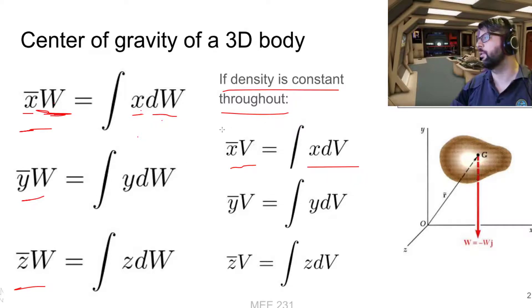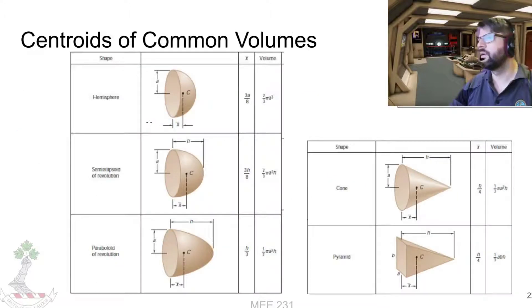So a few common centroids that you could find: hemispheres, semi-ellipsoids of revolution, paraboloids of revolution, cones, pyramids. I don't think anyone needs to have it necessarily on the chart to be told that the center of a box is directly in the middle of the box. Same idea.